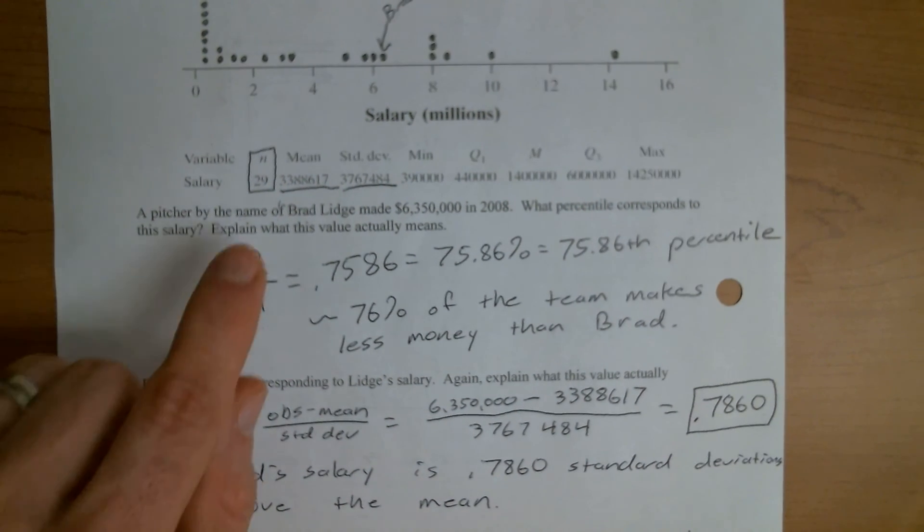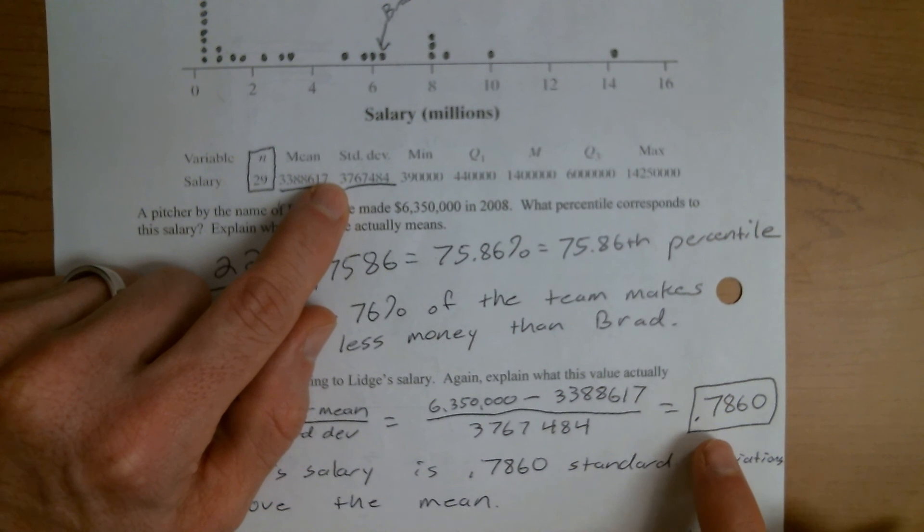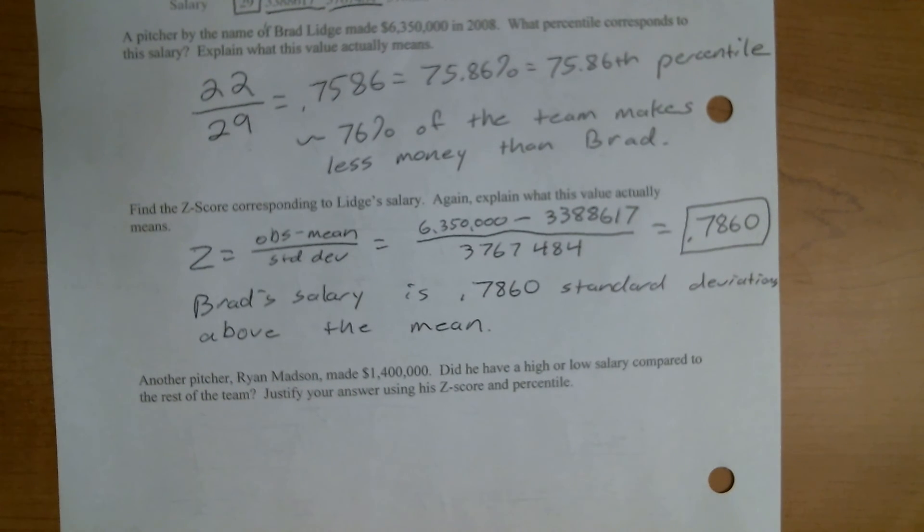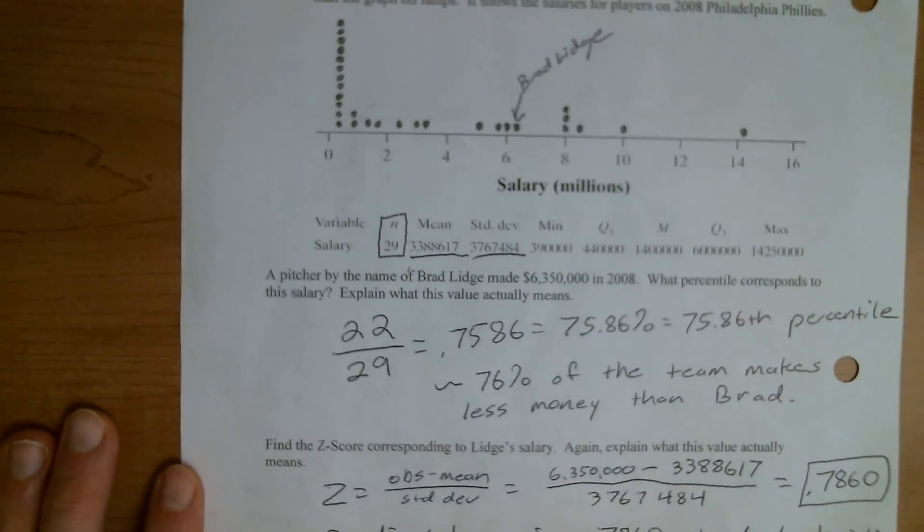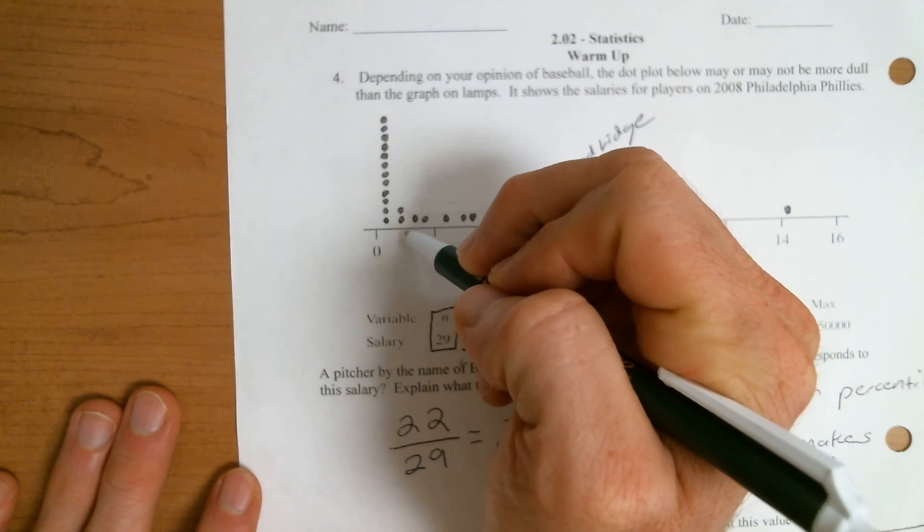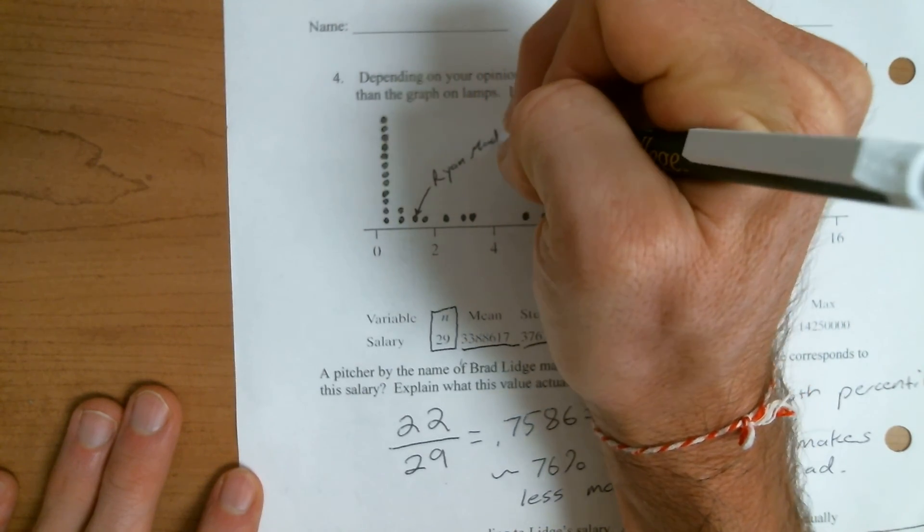And again, standard deviations for this group, one standard deviation is, you know, 3.7 million or something. So it's basically 78, 79% of this value above the mean. Let's see here. Another pitcher, Ryan Mattson made 1.4 million. Did he have a high or low salary compared to the rest of the team? Justify your answer using his Z score and percentile. So again, we're going back to our graph. If this right here, the center line is a million, I'm going to say that this one right here is probably our good friend, Ryan Mattson.